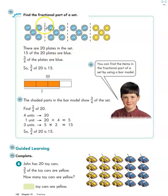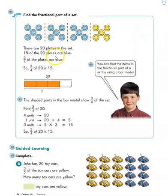We know that we can split those 20 plates into four equal groups, because 20 divided by four groups would give us five plates in each group. So after we have split them into our four groups, we can see that three out of four of those groups are the blue plates. And we know that in that group of three-fourths, we have 15 plates. So that means that three-fourths of the number 20 is 15.